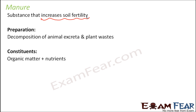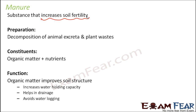Manure is made up of organic matter plus nutrients, and these extra nutrients are what we are looking for. Its function is to improve the overall soil structure — it increases the water holding capacity of the soil. If the soil is able to hold a good amount of water, the plant gets as much water as it needs at any point in time. It helps in drainage and also avoids waterlogging, so it doesn't allow too much water to get locked in one place, which would be harmful for the plants.